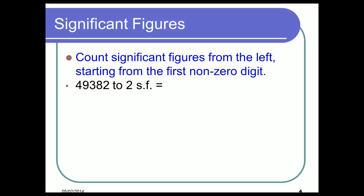If I have 49,382 to two significant figures — we go from the left and the first digit that's not zero is a four, the second one is a nine. We do the same thing as before: put our dotted line in and put a box around those two digits. We're rounding 93 to the nearest ten, which is 90. So we'd have 490, and then we fill the remaining places with zeros as place holders. So 49,382 rounded to two significant figures is 49,000.